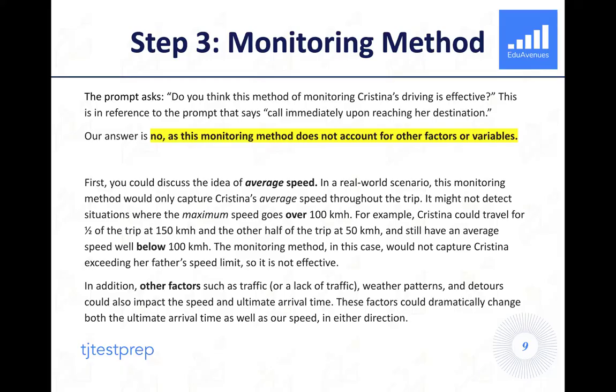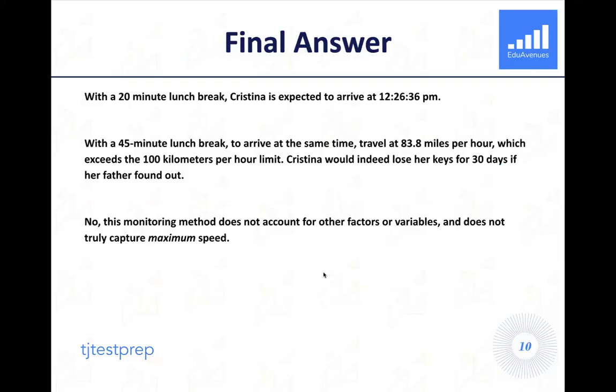In addition, we oftentimes ask our students to consider other factors that might play into the solution. Factors like traffic or a lack of traffic or weather patterns or even detours could also impact the speed and ultimate arrival time. These factors could also dramatically change both the ultimate arrival time as well as our speed in either the positive or negative direction. So those would be excellent real world factors to be discussing in addition to this first part about averages versus maximums. Our final answer is listed here, summarizing the three parts of the prompt that were asked.